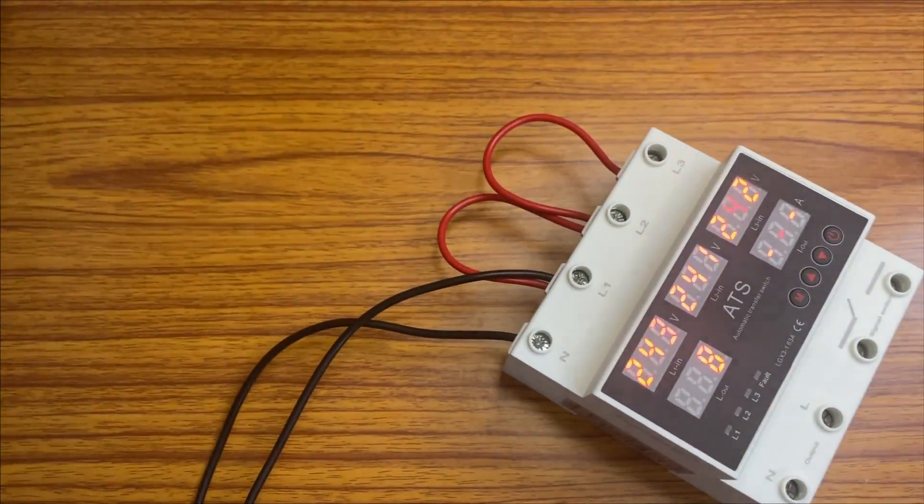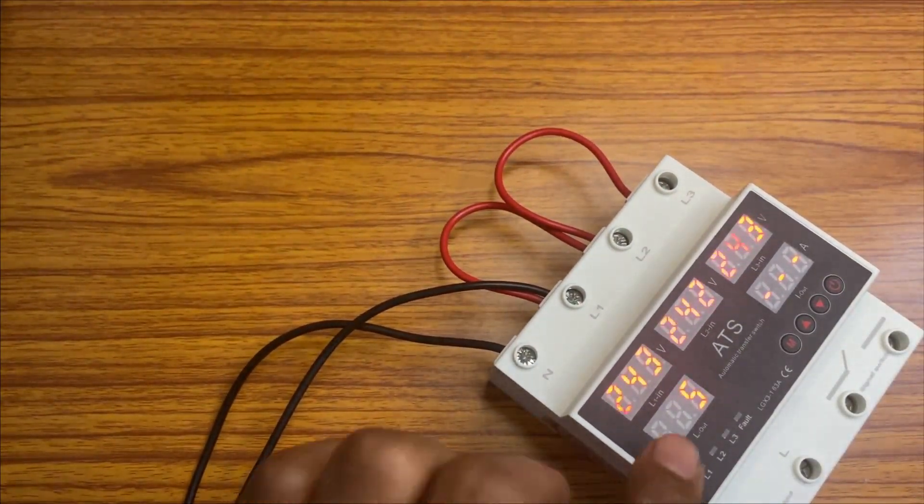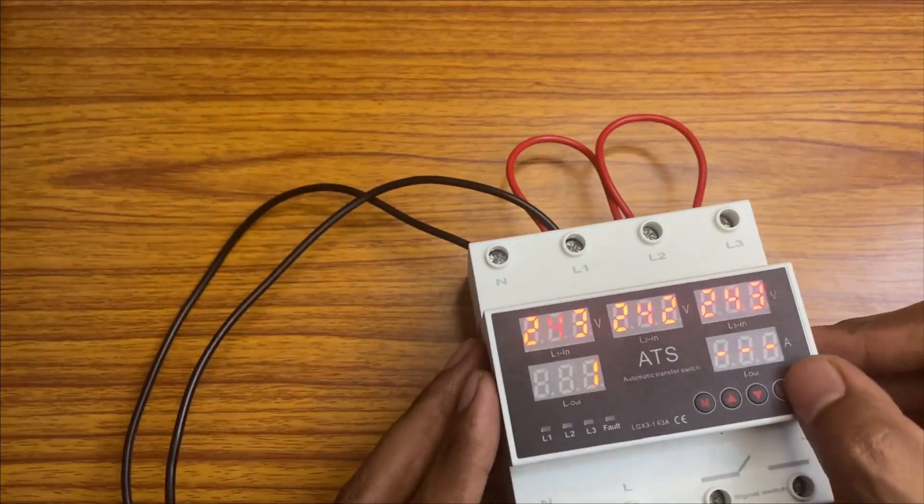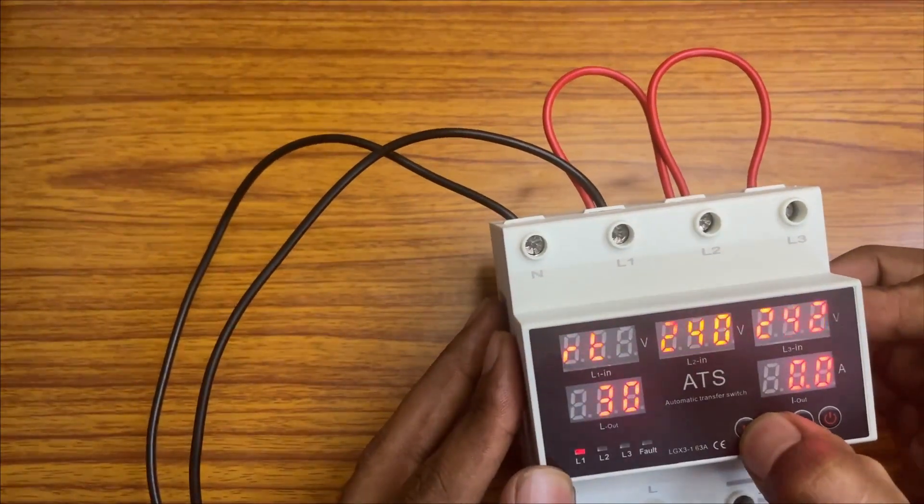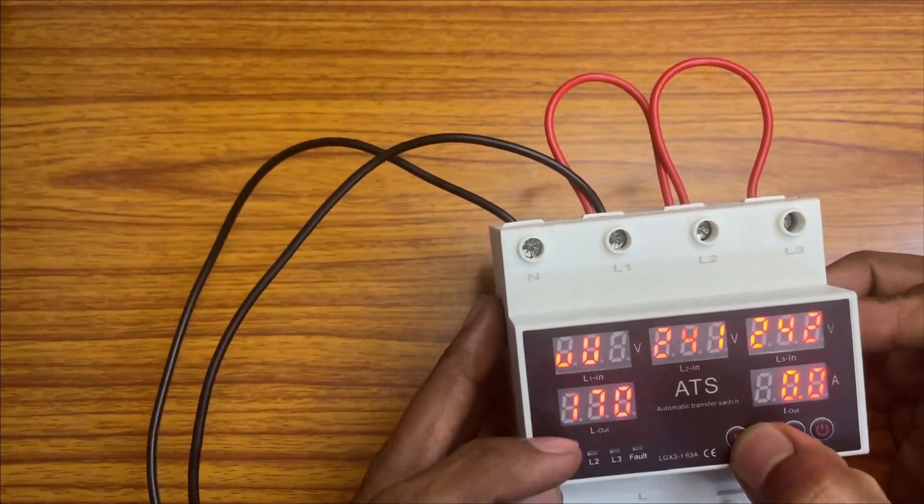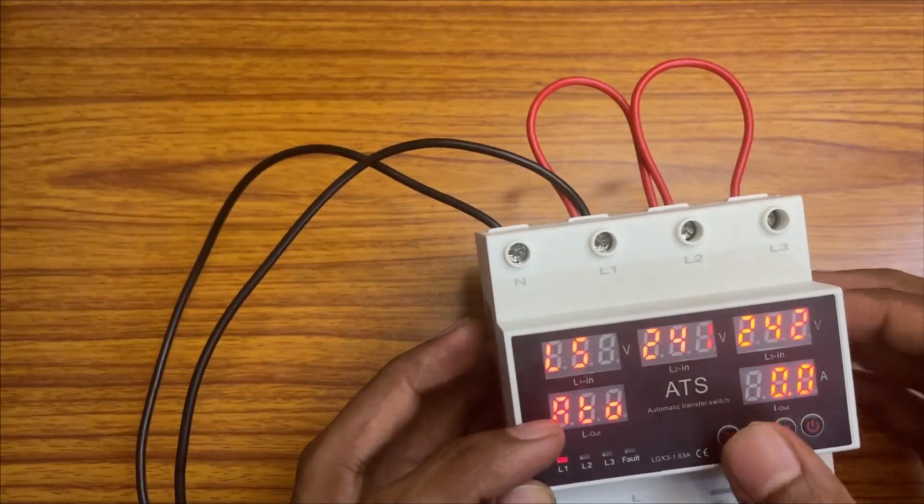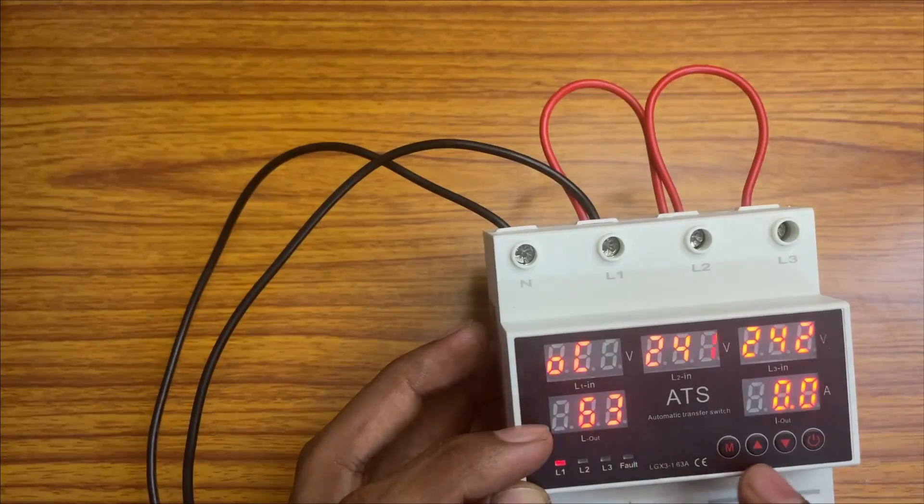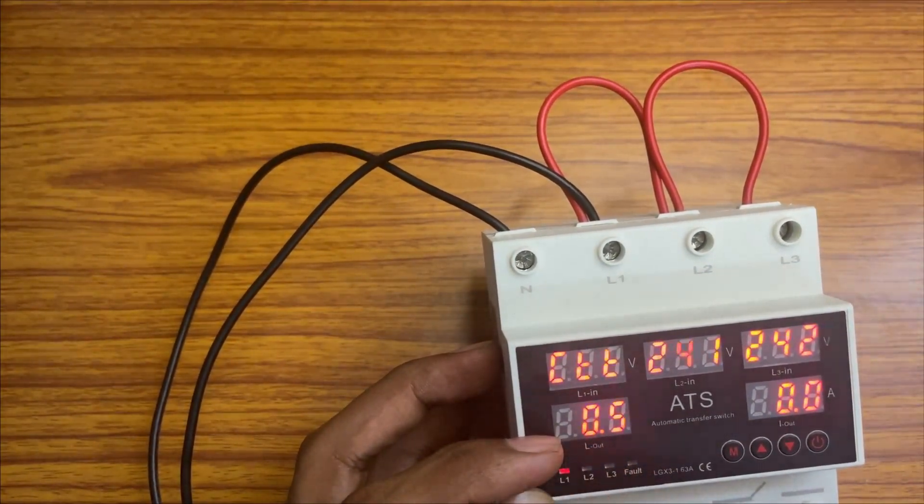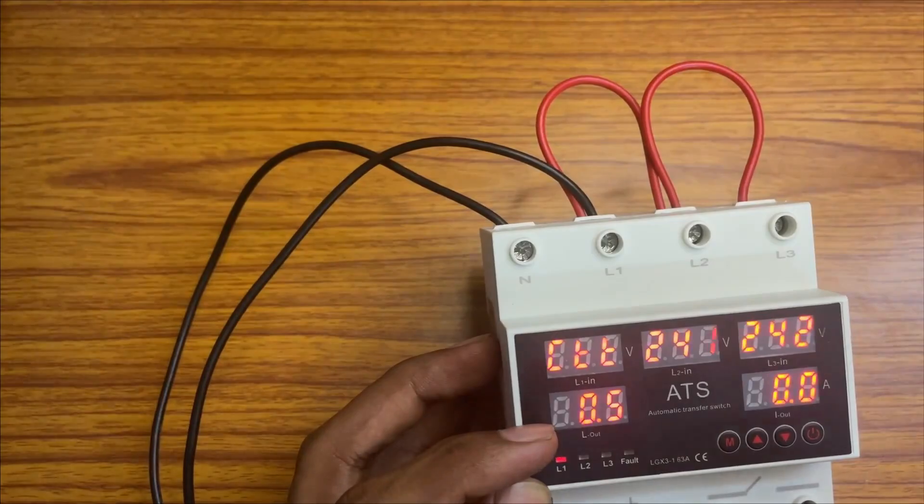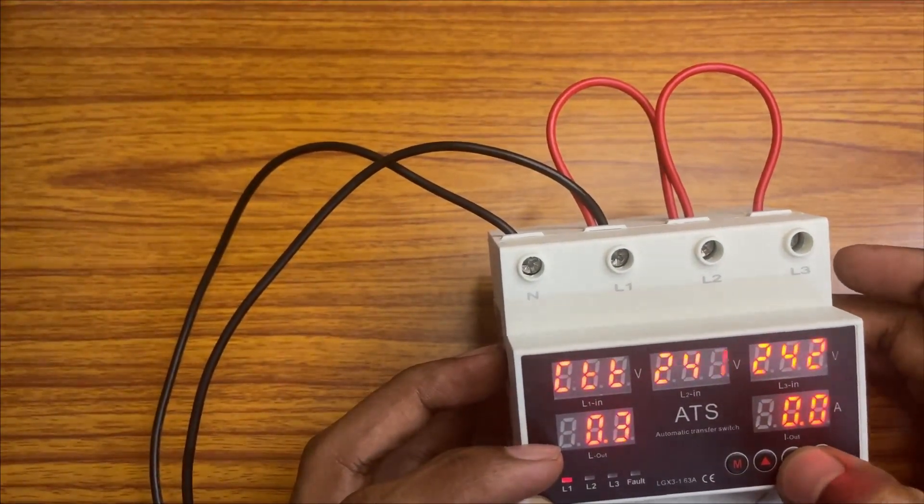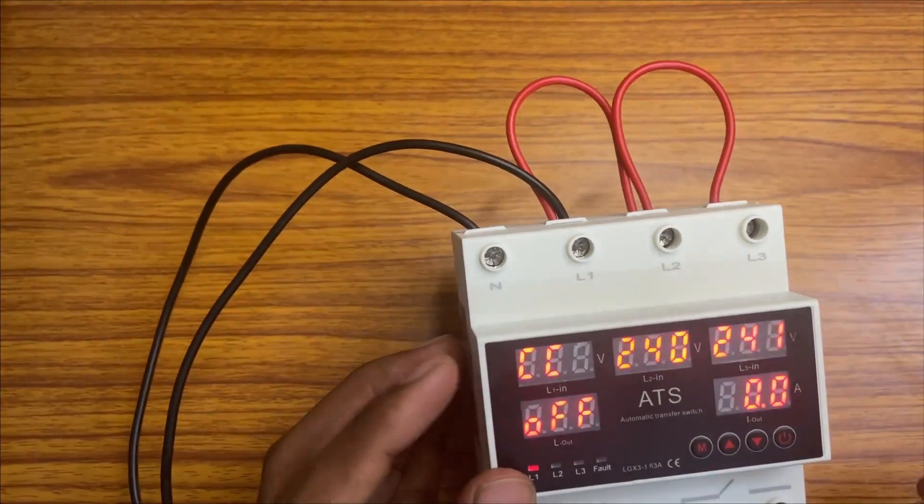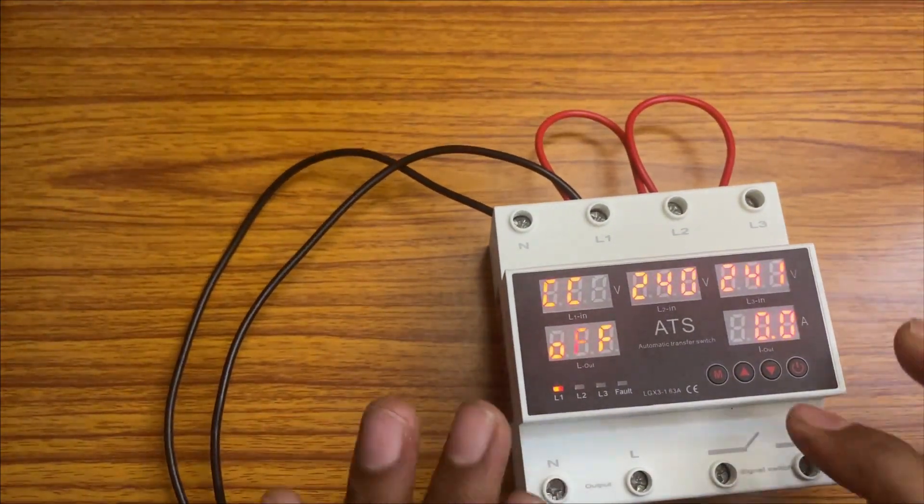This will work as individual phase also. We have explained already the over voltage, under voltage. This is L5 auto. This is over current 63 amps maximum. This is over current action time protection 0.1 millisecond. You can decrease like 0.1 milliseconds also.